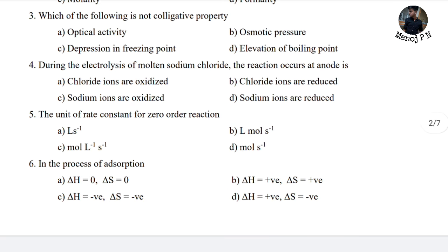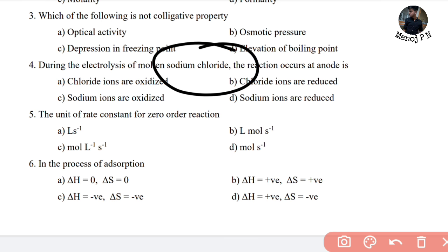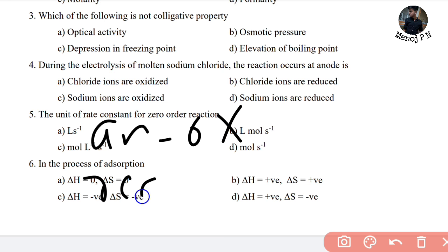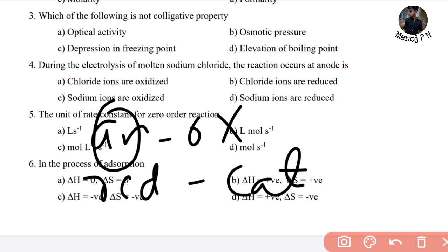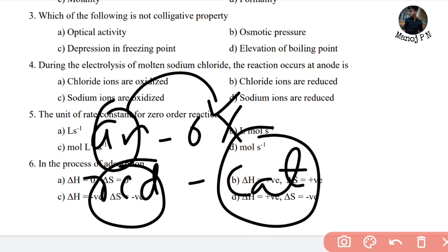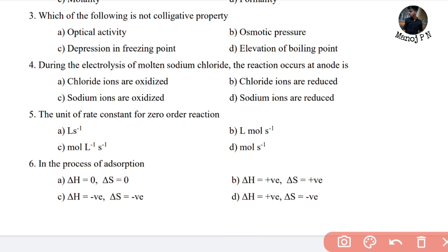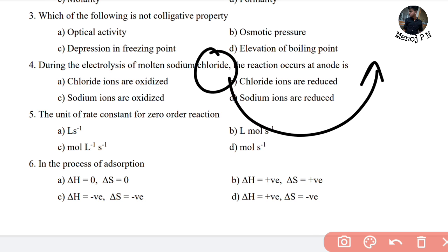During the electrolysis of molten sodium chloride, the reaction occurs at the anode. Sodium chloride — you can see the negative charge basically changes. The keyword is AnOx RedCat: anode = oxidation. So during electrolysis of sodium chloride, the reaction at the anode is oxidation. Chloride undergoes oxidation. Option A is the answer.